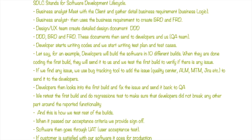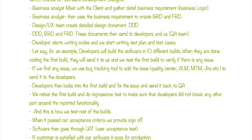When they are done coding the first build, they send it to QA and we test the first build to verify if there are any issues. If we find any issue, we use a bug tracking tool to add the issue. Developers then look into the first build and fix the issue.